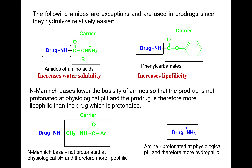There have been a few cases where amides have been used as prodrugs. The following amides are exceptions and are used in prodrugs since they hydrolyze relatively easily. For instance, a drug that has an amine group can be conjugated to a carboxylic acid carrier that also contains an amine group. This amine group can be protonated at physiological pH, which can increase the water solubility.